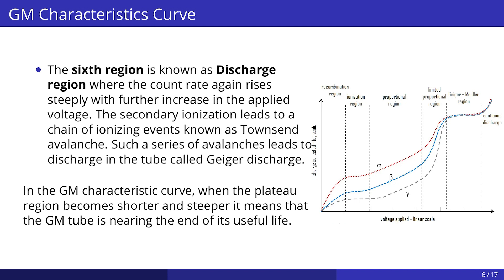In the GM characteristic curve, when the plateau region becomes shorter and steeper, it means that the GM tube is nearing the end of its useful life.